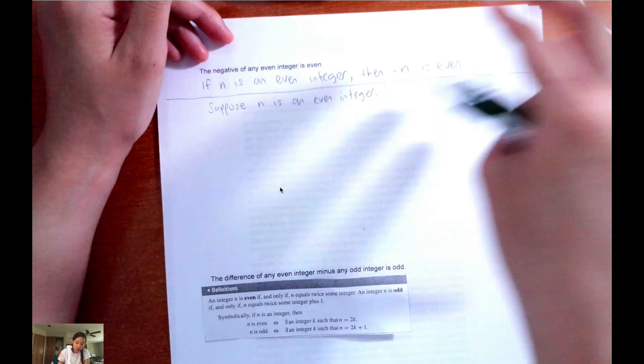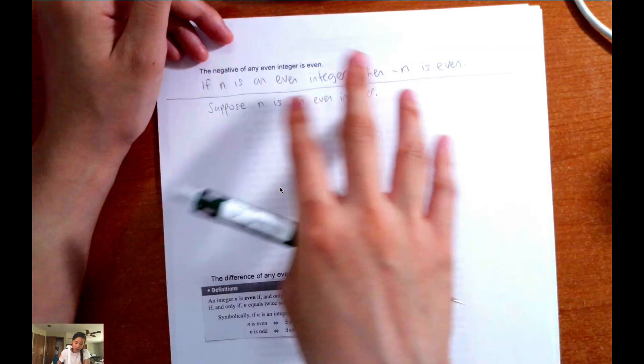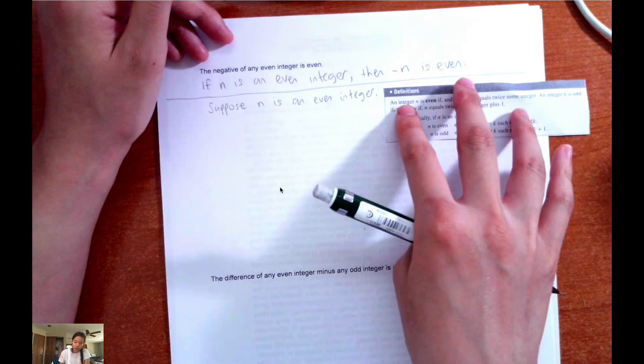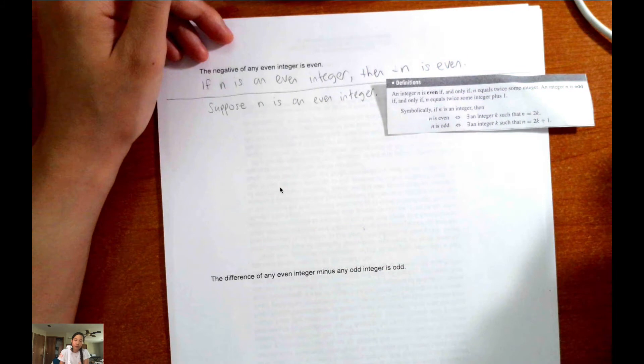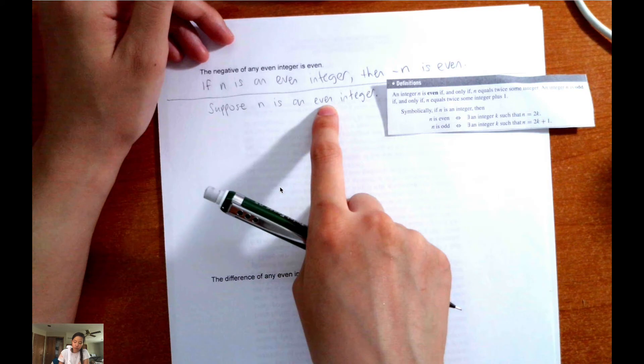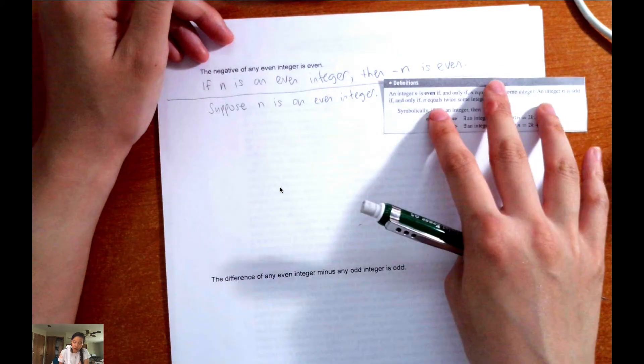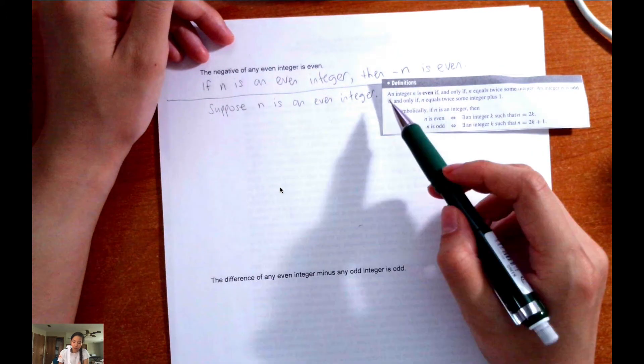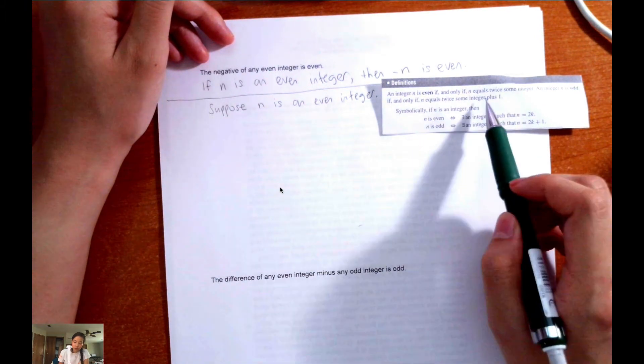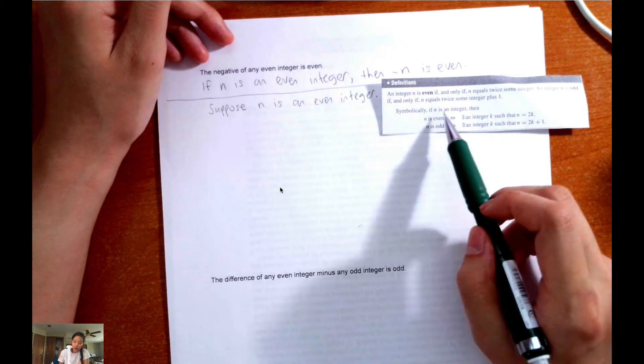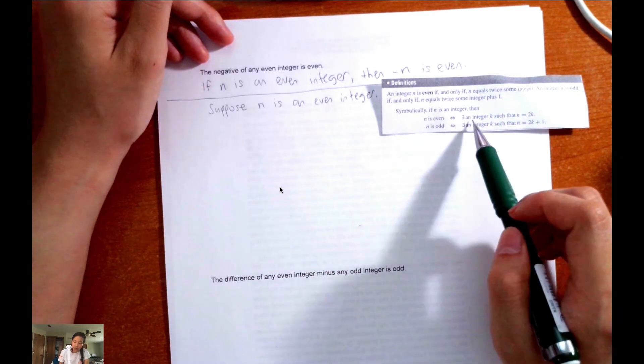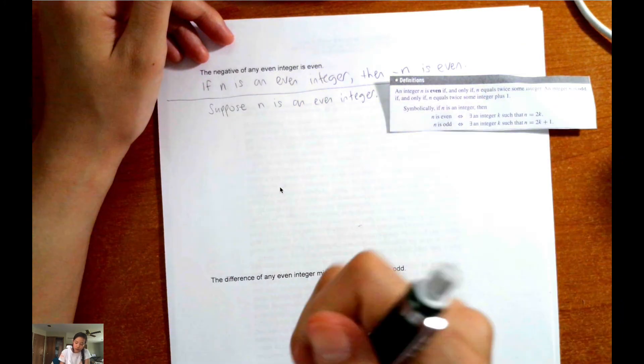So the next thing you want to do is address all of the technical terms that may not be understandable to everyone. So here the word even, not everyone knows what even means. So I have the definition right here. An integer n is even if and only if n equals twice some integer. So symbolically, if n is an integer, then n is even when there exists an integer k such that n equals 2k. So here we have our definition of even.